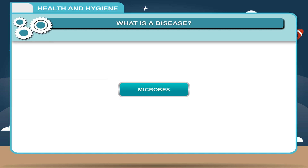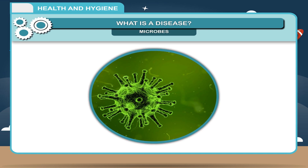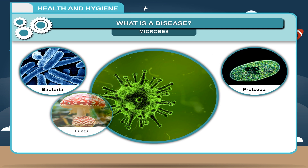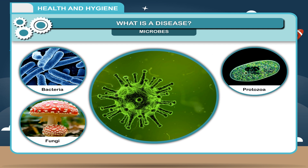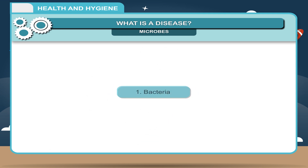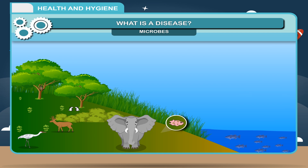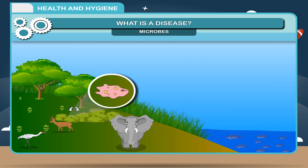Microbes: There are four kinds of microbes — bacteria, protozoa, fungi and virus. Bacteria are the most widespread organisms on the earth. They are found everywhere — in air, water and soil. They also live on dead matter or living things as parasites.